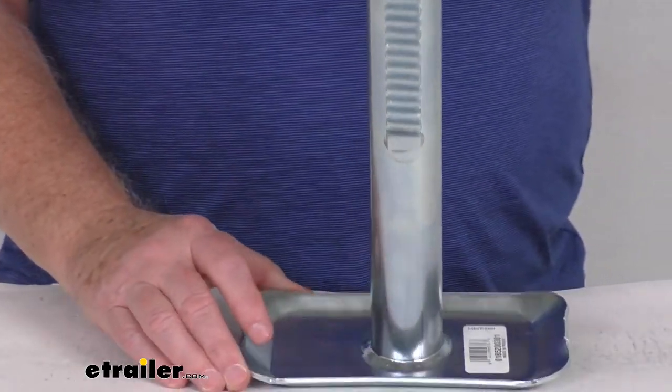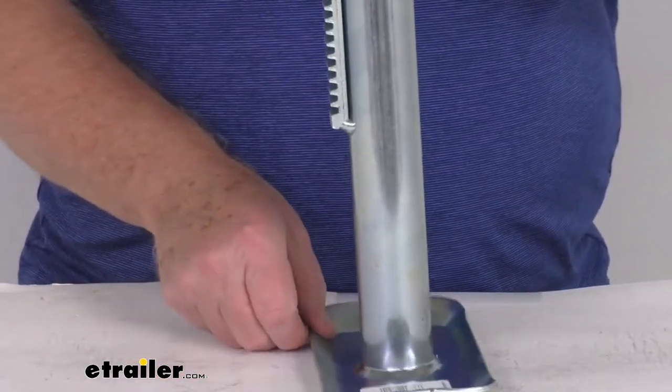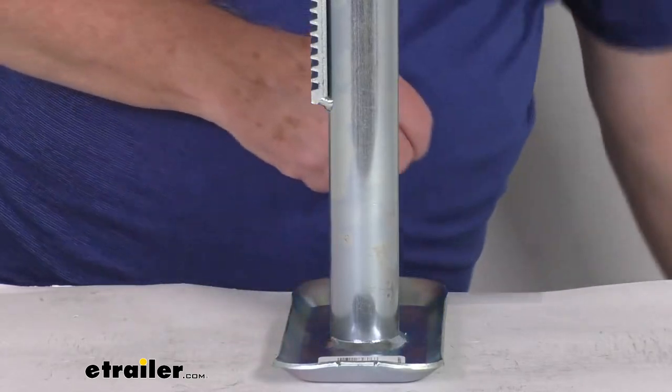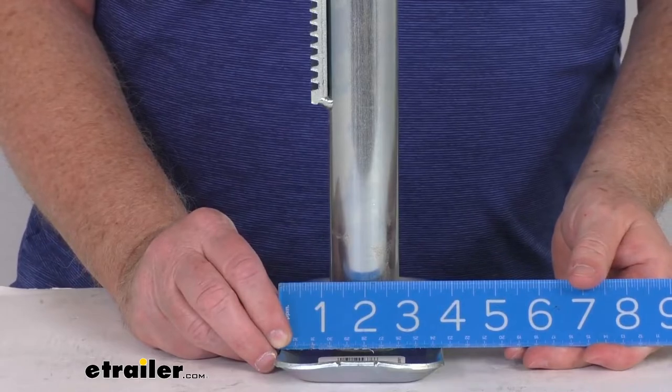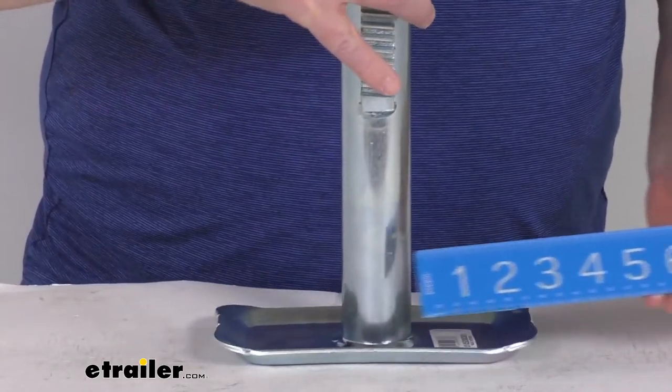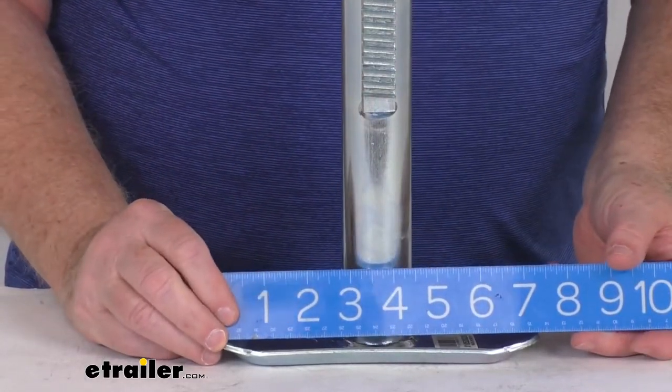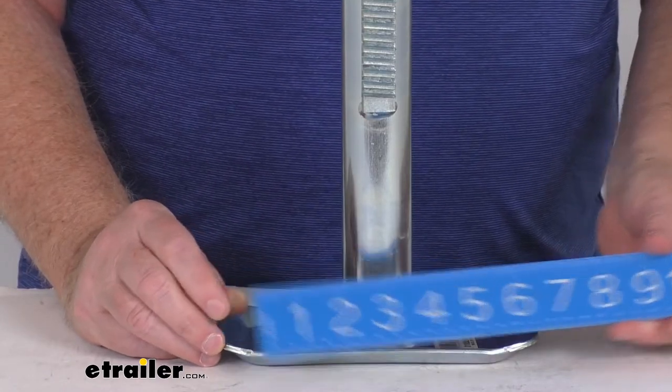The footplate is included, and measuring it, it's about three and three-quarter inches wide and about seven and a half inches long.